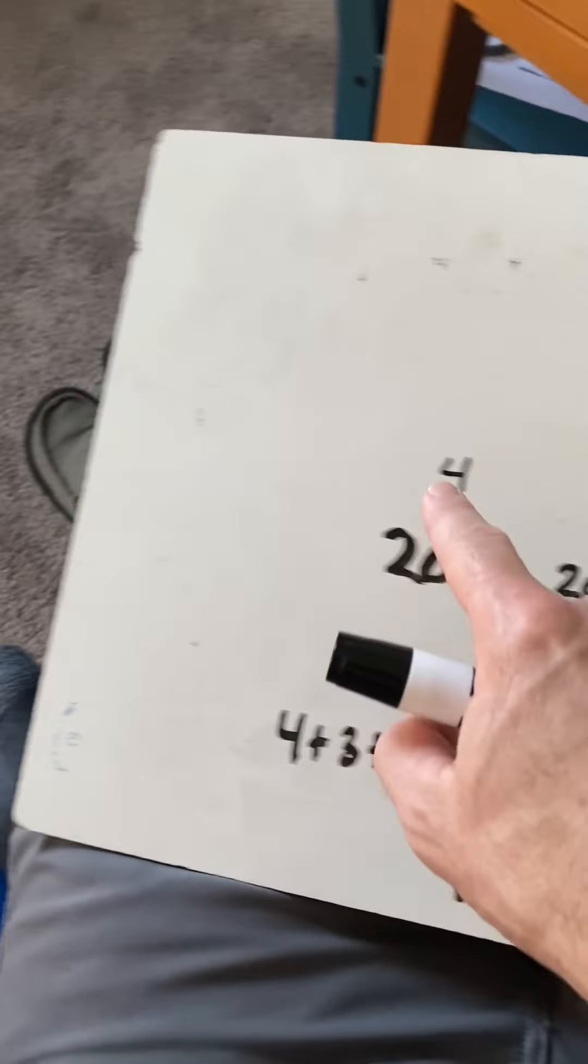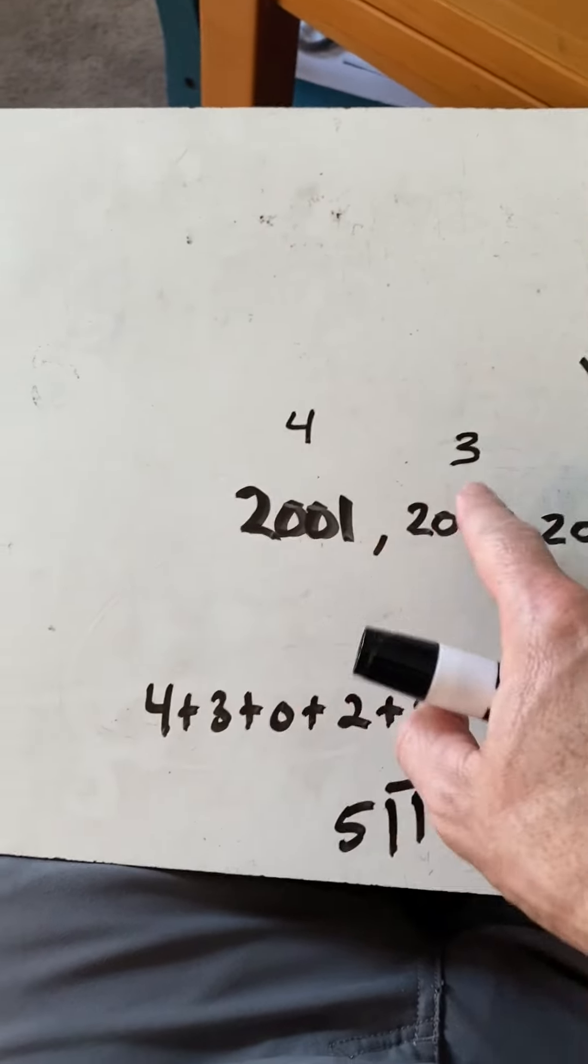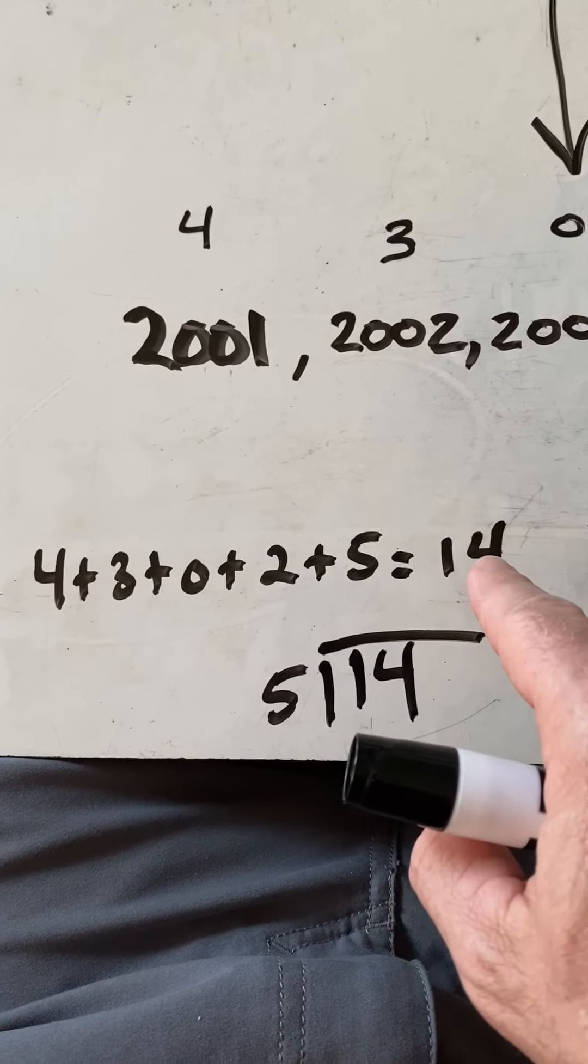So I take those numbers and I add them: 4, 3, 0, 2, 5. And I get 14.